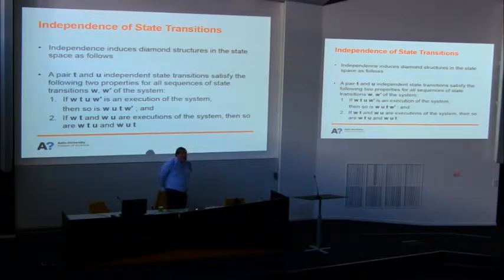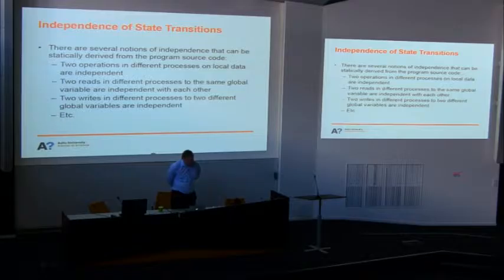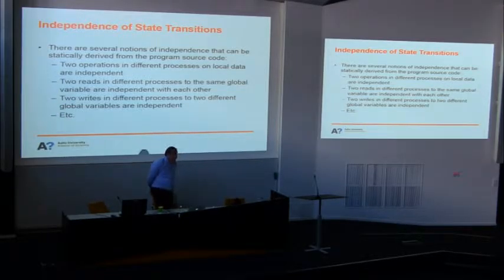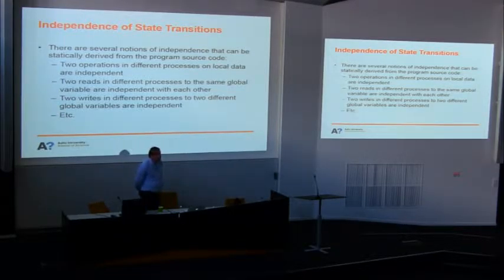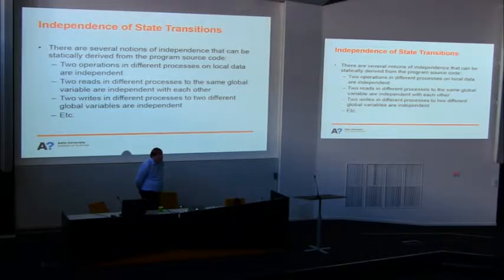Q&A: A student asks whether the first independence condition is too strong — whether a weaker condition using permutations of W' would suffice. The speaker clarifies that W' is a sequence of executions, not a state, and the condition must hold for all W and W'. The speaker notes there are weaker notions like conditional independence, but for this lecture, this basic static definition will be used. Another student raises that proving two threads write to the same location is itself hard, e.g., with array accesses indexed by thread ID. The speaker responds that the algorithms take a cautious approach: if independence can be statically proven for all variable indexes, they are deemed independent; otherwise, they are treated as dependent.